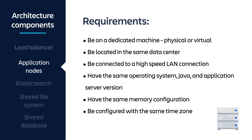The application nodes are where Bitbucket Data Center is actually running. All cluster nodes must be on a dedicated machine — physical or virtual — be located in the same data center, connected via a high-speed LAN, have the same operating system, Java, and application server version, have the same memory configuration, and be configured with the same time zone with synchronized clocks.